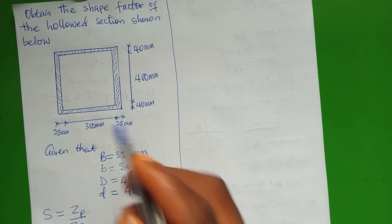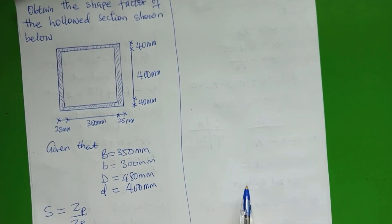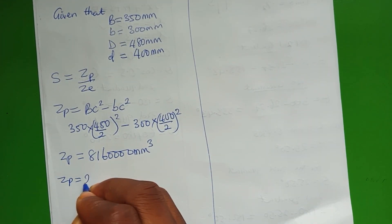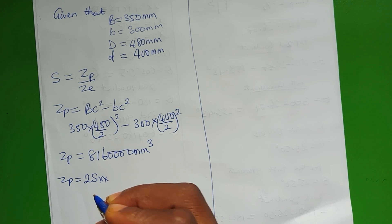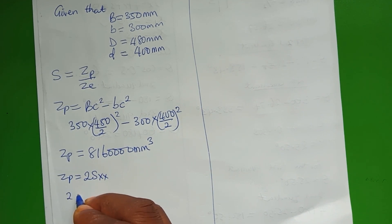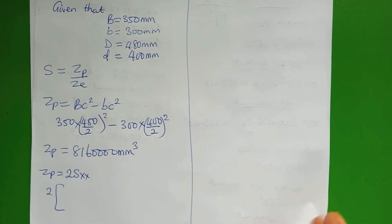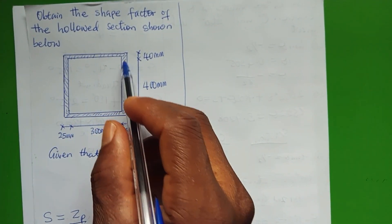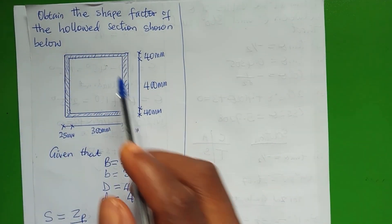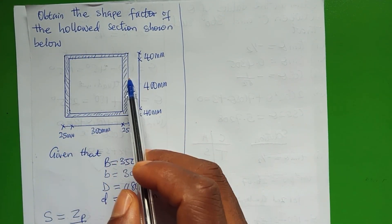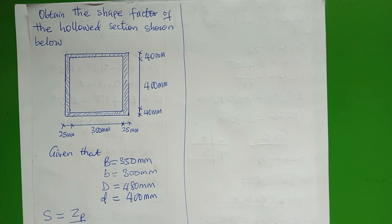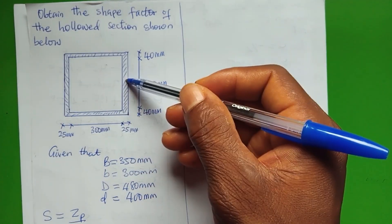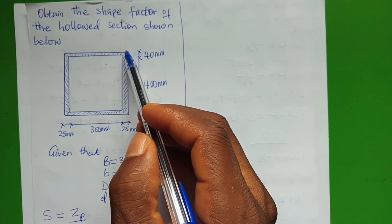Alternatively, you can decide to take a moment about the neutral axis. When that is done, Zp is equal to 2 times the area. If you divide this shape into 2, you have a rectangle, and the area of a rectangle is length times width or breadth.